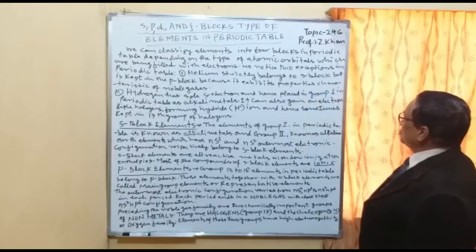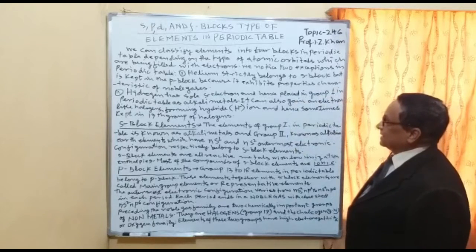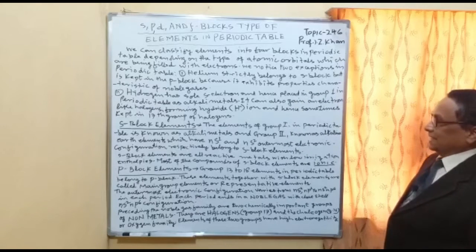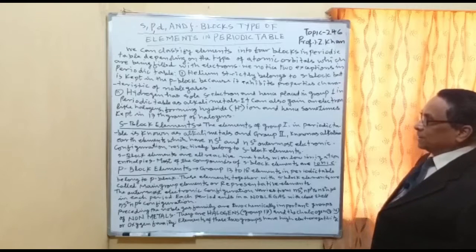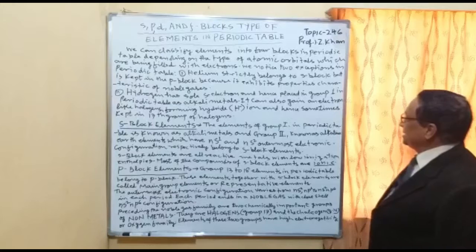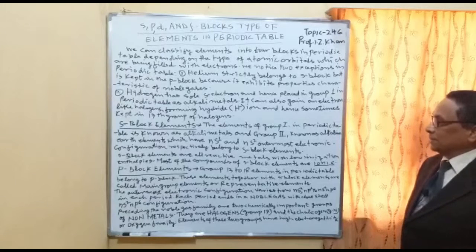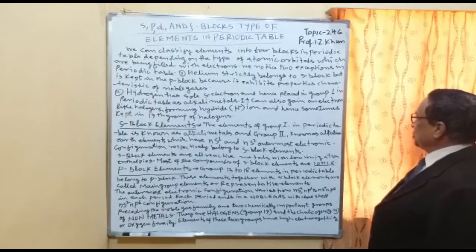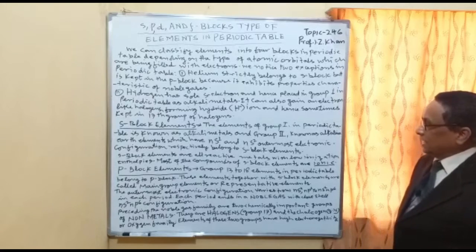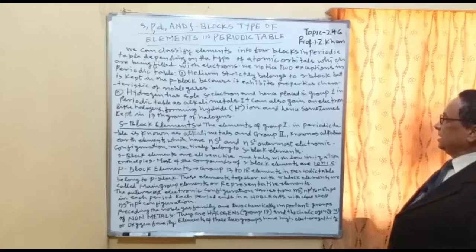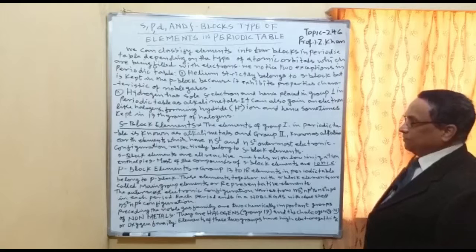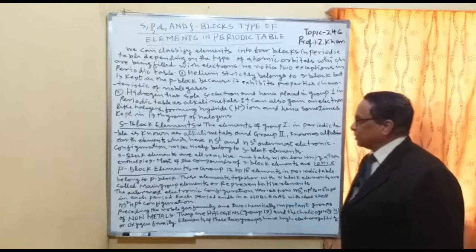Helium strictly belongs to the S block, but it is kept in the P block because it exhibits properties characteristic of noble gases. Hydrogen has a sole S electron and is hence placed in group 1 as an alkaline metal. It can also gain an electron like a halogen, forming the hydride H⁻ ion, and is hence sometimes kept in group 17 with the halogens.